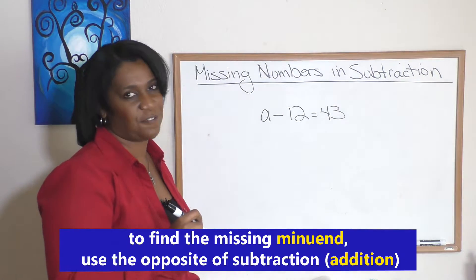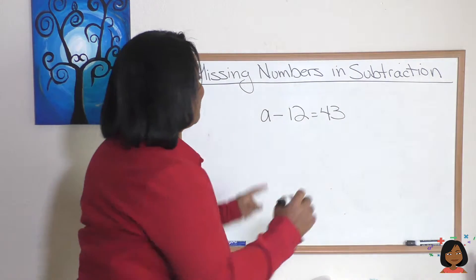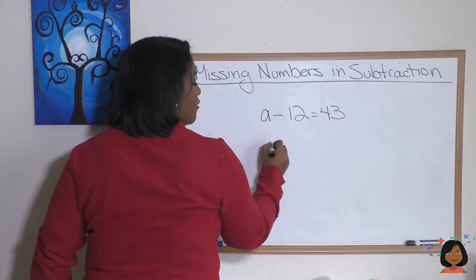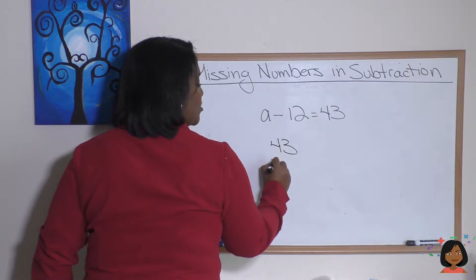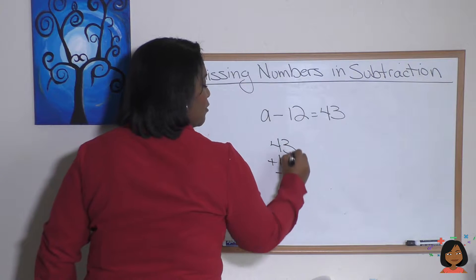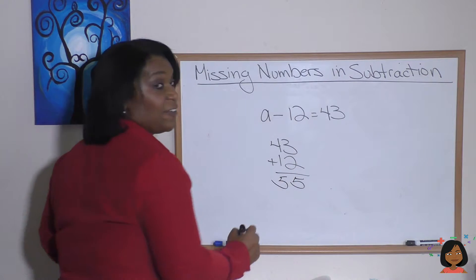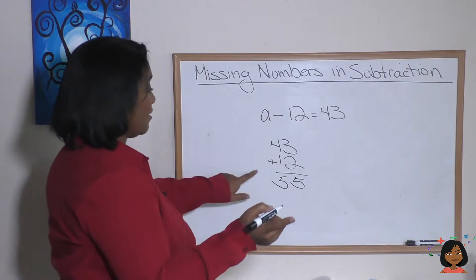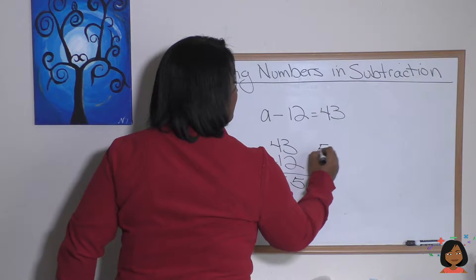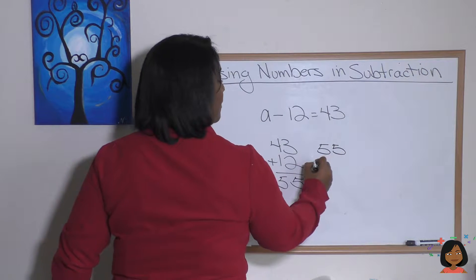So let's do it. We're going to add 43 and 12. Three plus two is five, four plus one is five.